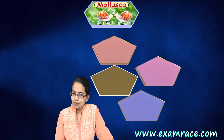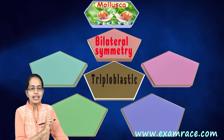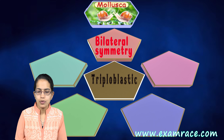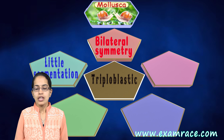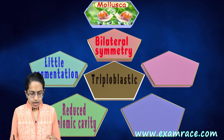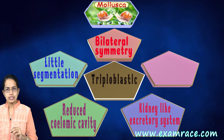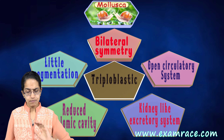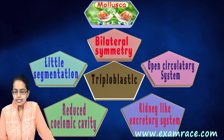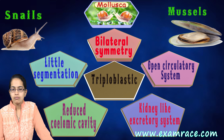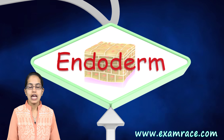The next is Mollusca — triploblastic and bilaterally symmetrical. So all organisms beyond Platyhelminthes share these characteristics, which is simple to remember. Mollusca has very little segmentation and a reduced coelomic cavity. They have kidney-like structures mainly for excretion. They also have an open circulatory system, found in both Arthropoda and Mollusca. Examples include snails and mussels, and they also have foot-like movement.